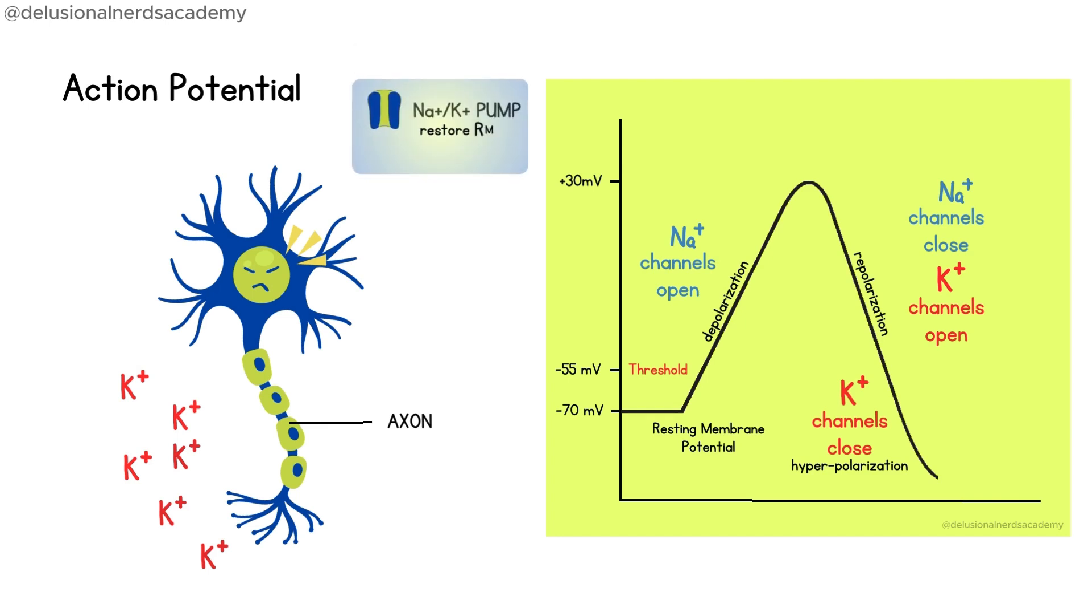It helps restore the resting potential by pumping sodium ions out of the neuron and potassium ions into the neuron. Eventually, the neuron returns to its resting potential of negative 70 millivolts, ready to fire another action potential if stimulated again.